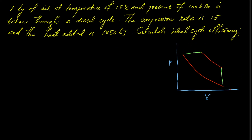This is our diesel cycle. We have process 1 to 2, which is a reversible adiabatic compression process. From 2 to 3, it is a constant pressure heat addition process. Process 3 to 4 is again a reversible adiabatic expansion process, and 4 to 1 is a constant volume heat rejection process.